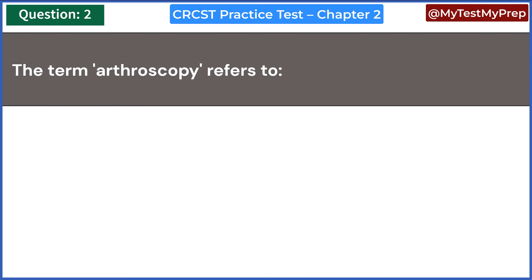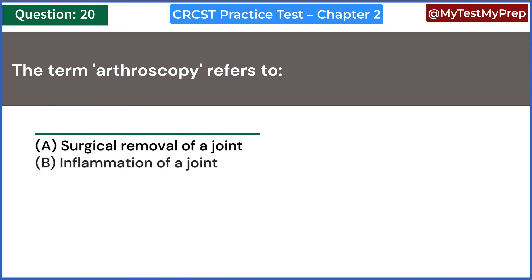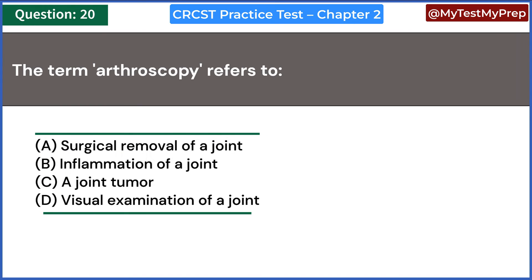The term arthroscopy refers to: A. Surgical removal of a joint. B. Inflammation of a joint. C. A joint tumor. D. Visual examination of a joint. Answer: D. Visual examination of a joint.